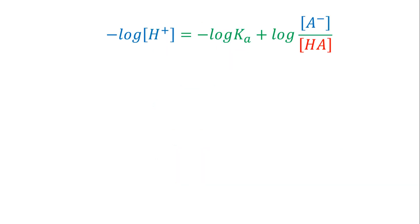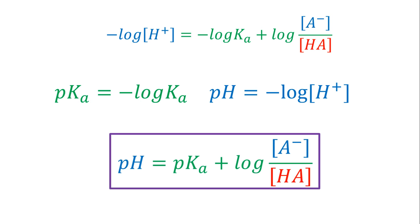Now we have in the equation the negative logarithm of the H-plus concentration and the Ka. These values are equal to the pH and pKa respectively, so we substitute that in the equation. This is called the Henderson-Hasselbalch equation, and it is very useful since it relates the pH of a solution to the concentration of acid, conjugate base, and the pKa.